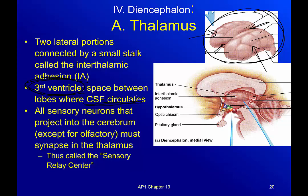All sensory neurons that project into the cerebrum must synapse in the thalamus. In other words, the thalamus is my relay center — this is where I connect to get to my next destination. It's like traveling out of Corpus Christi: you either connect in Houston or Dallas to get to bigger places. Because of that, we call it the sensory relay center.